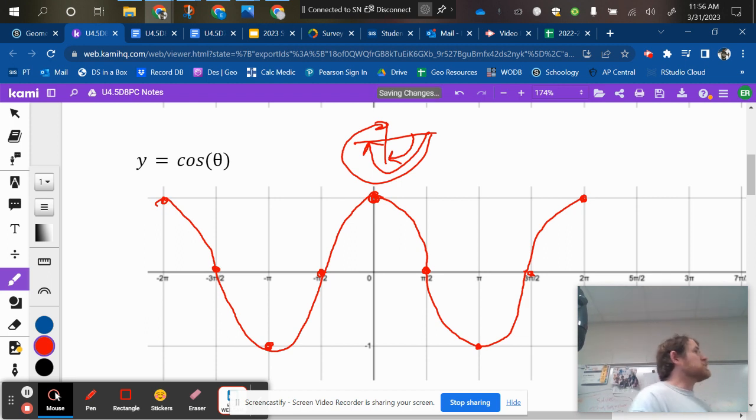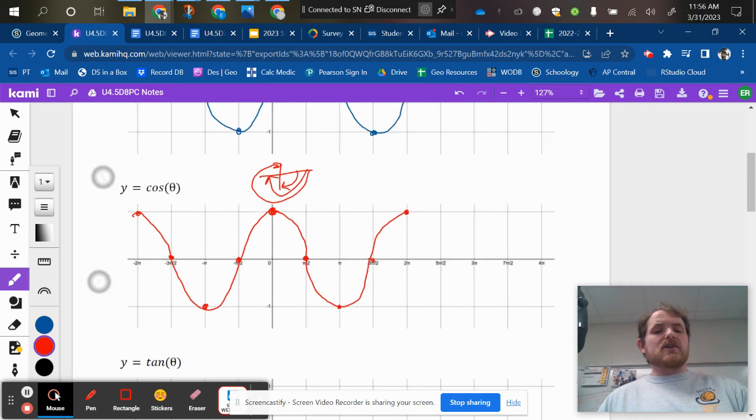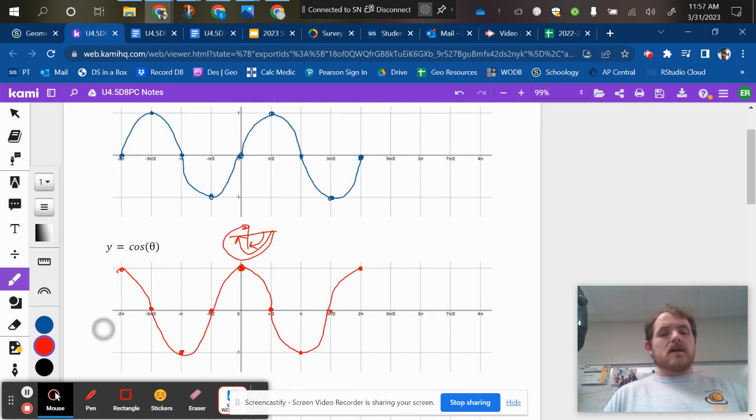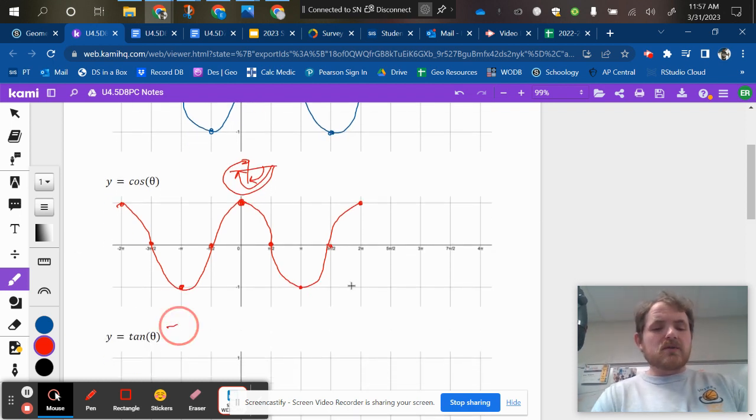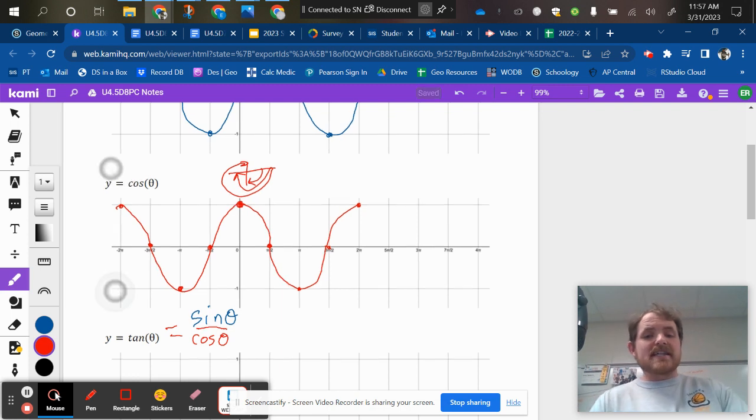Now, do we remember the relationship between sine and cosine and tangent? Do we remember that relationship between sine, cosine, and tangent? Other way. So tangent is also equal to the sine value, sine of theta divided by the cosine value, cosine of theta, okay? That's what the relationship is, and so we can actually take these graphs.